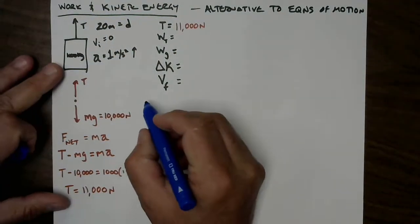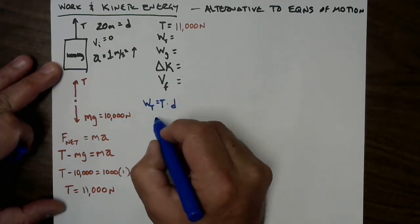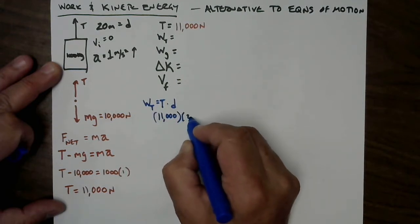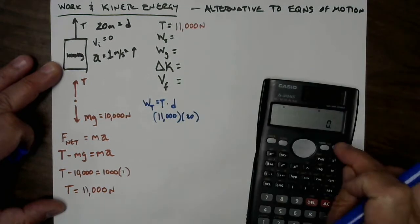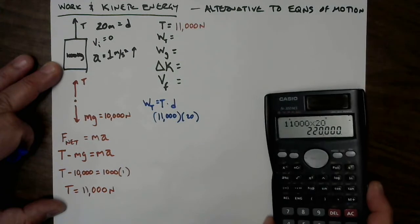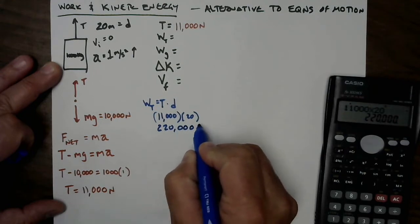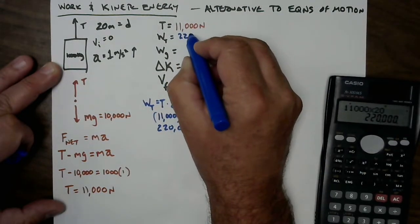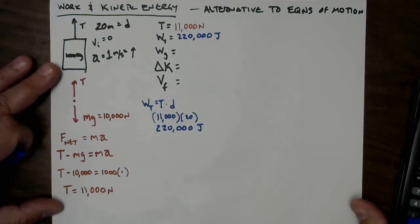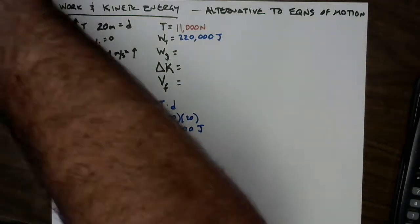Now let's figure out the work done by the tension. Work done by tension equals the tension times the displacement: 11,000 newtons times 20 meters equals 220,000 joules. That's a big number, but joules are a small unit of energy, so it's a reasonable value for an elevator.